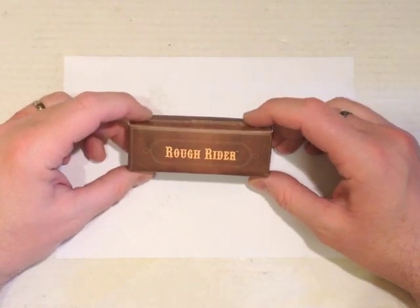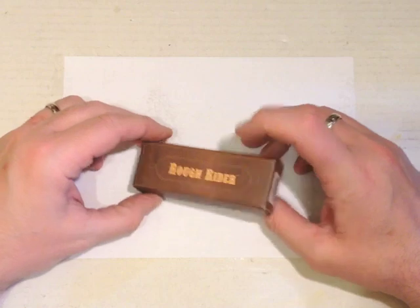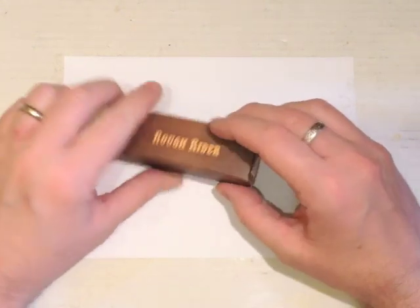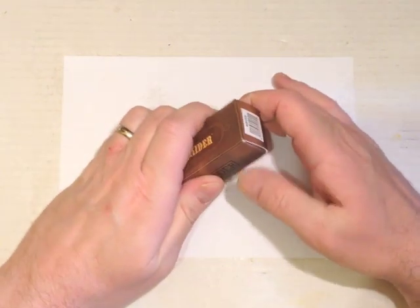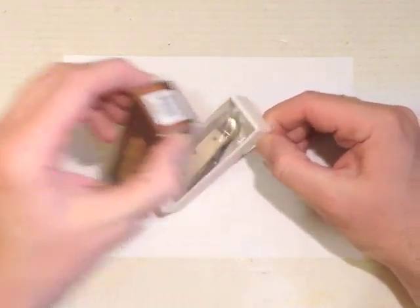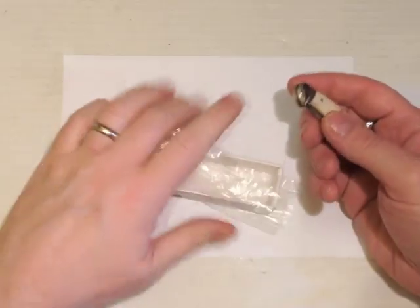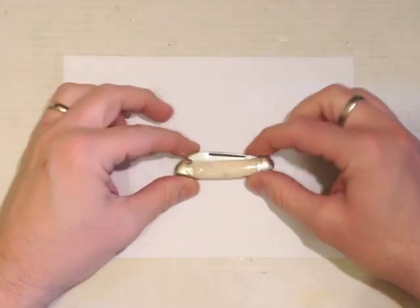Okay, so this is how the knife comes in the brown Rough Rider box and the model number is RR055 Mini Canoe. We have the knife in the little pouch as normal, and this is it.